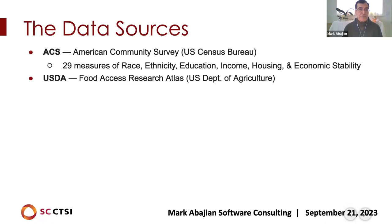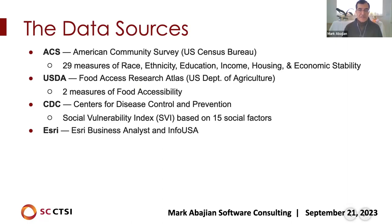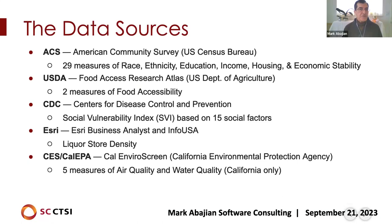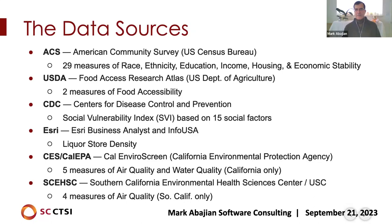Also from the U.S. Department of Agriculture: food access — two measures of food accessibility. The CDC provides a social vulnerability index based on 15 different social factors. We use the ESRI Business Analyst to give us liquor store density or alcohol access — though ESRI requires a subscription. California EnviroScreen, part of the California EPA, gave us five measures of air quality and water quality, for California only. A unit of the Keck School of Medicine provided four additional measures of air quality for Southern California only — data collected about 10 years ago, so not the latest, but applicable for older patient addresses.